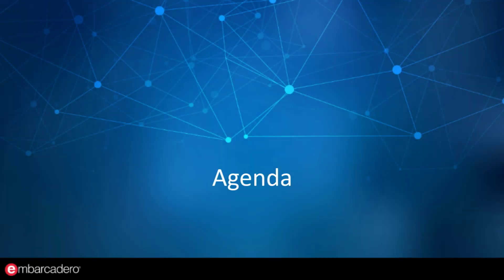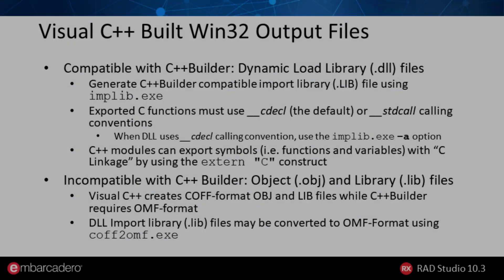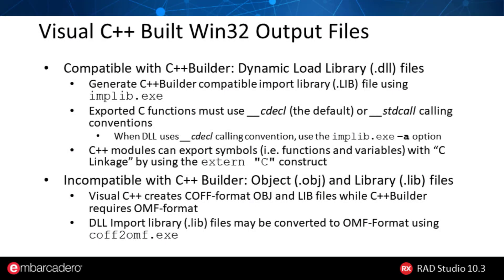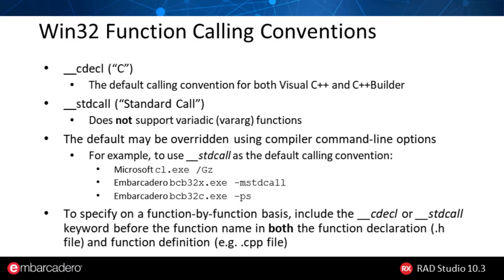The subsequent videos in this series are going to teach you what you need to know to combine Visual C++ and C++ Builder modules into a single combined project, beginning with object and library file formats and compatibility. Even an experienced developer may assume that all object files and library files are interoperable, and we're going to cover that in detail. In the subsequent segment, we'll detail what is necessary to create a Visual C++ built DLL compatible with your C++ Builder application, including creating C++ Builder-compatible import libraries using C++ Builder tools like CoffaOMF, Implib, and Tlib to create and examine library and object files.